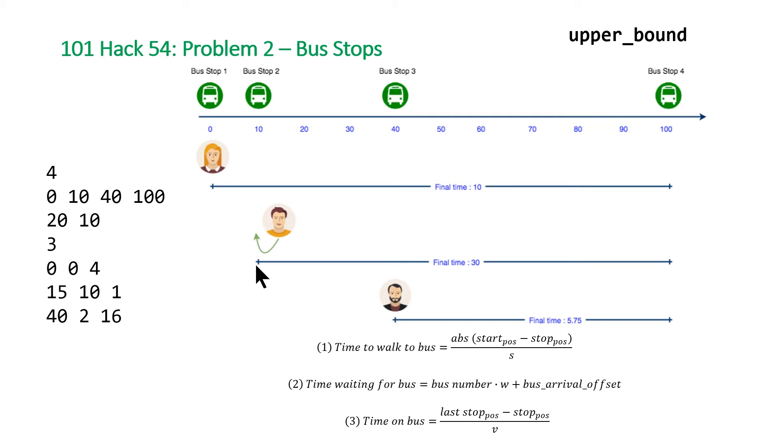So like I said before, if we were looking at the second individual we could look at bus stop number two and bus stop number three because he starts at position 15. First we'll do our call to upper bound which will retrieve us bus stop number three.